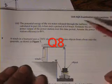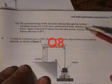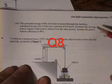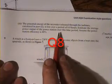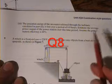For part 3, the potential energy of the seawater—the thing that you've just calculated—is released through the turbines. It takes 6 hours for this to happen. So you've got to estimate the average power output of the power station over this time period. Assume the power station efficiency is 40%.